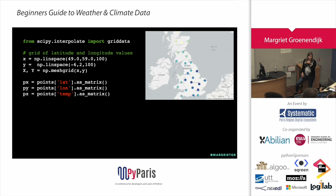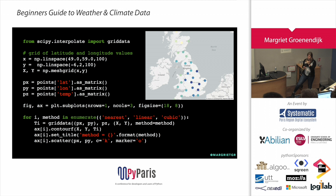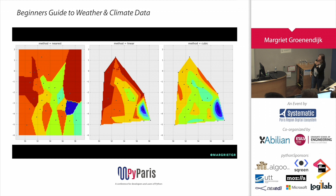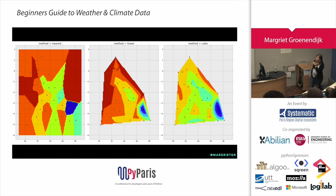Then you just say griddata, pass your grid and your points, and I added three different options: nearest neighbor, linear, or cubic — though there are many more. It gives you three maps of the UK. The nearest neighbor method just finds the nearest point for each grid cell, which clearly doesn't work for temperature because it's a continuous field — it looks just silly. If you increase to linear and then cubic you get progressively better maps. But the way better approach would be to use kriging, which just keeps finding the smoothest surface possible.